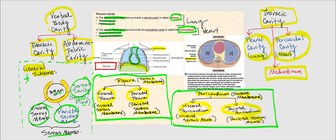The thoracic cavity is superior to the abdominal pelvic cavity, and the abdominal pelvic cavity is inferior to the thoracic cavity. This is essentially a horizontal or transverse section through the thoracic cavity so you can see the heart, the pericardial cavity, and the pleural cavity that surrounds the lungs.